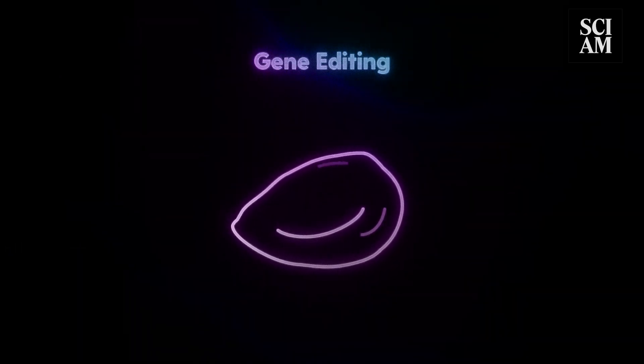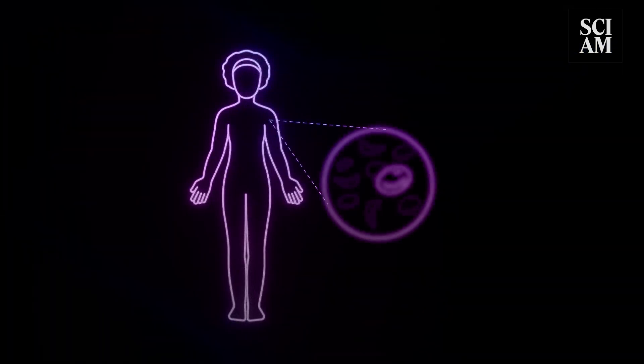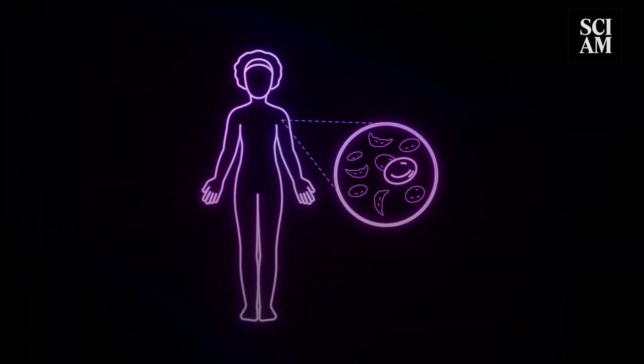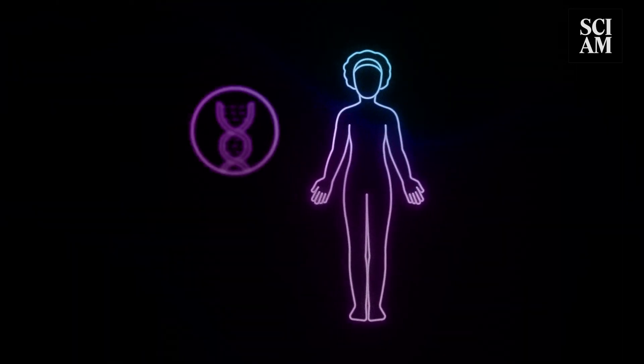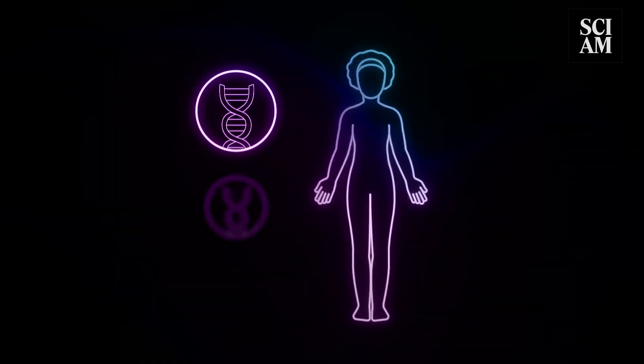Gene editing technology is central to this hope. A new treatment approach works by first harvesting unhealthy stem cells from a patient's bone marrow. The patient is treated with drugs that kill many of their unhealthy bone marrow cells. At the same time, scientists replace the faulty HBB gene with a healthy copy.